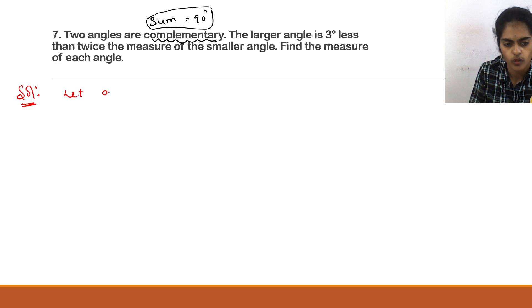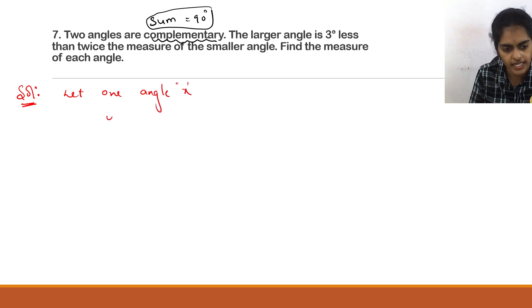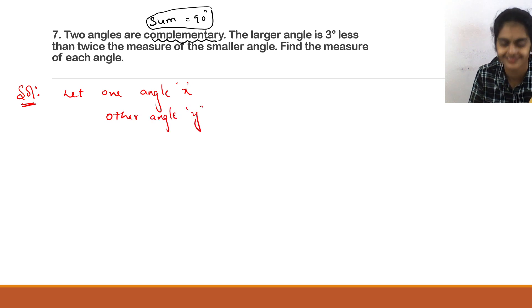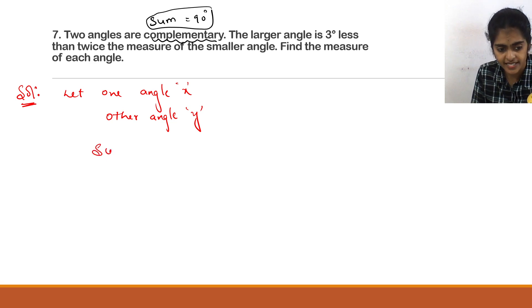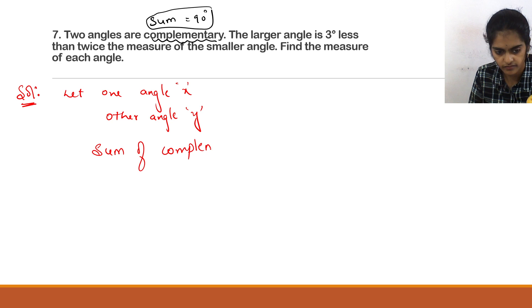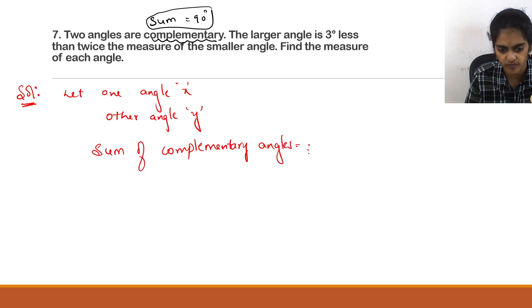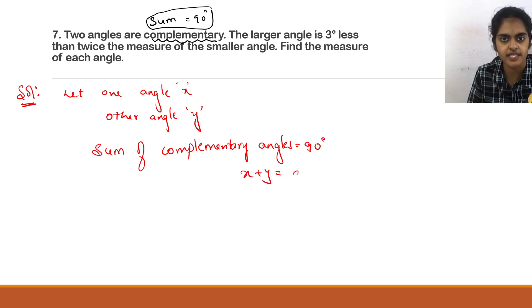Solution: let one angle be x and the other angle be y. Sum of complementary angles is 90 degrees, so x + y = 90. This is equation 1.